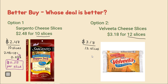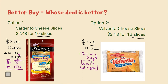Now let's compare the Velveeta. We have $3.18 divided by 12 — type that into your calculator. My calculator says 0.265, and we need to round to the second decimal place. Look next door: 5 or more, we raise the score. So instead of 26, it's going to say 27 — that's 27 cents per slice. So this is our unit rate.